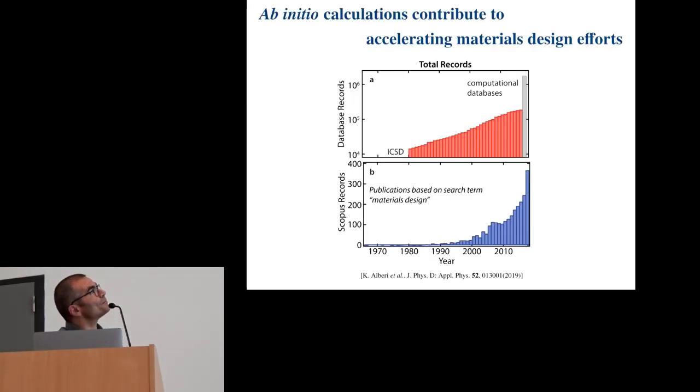So, I'm coming from more the materials design and high throughput efforts, and as you know, there's been the initial calculation has contributed quite a lot into accelerating this materials design, as you can see from here. So, we've seen an increase in the computational databases, which translated directly into more materials being designed, discovered for precise applications.